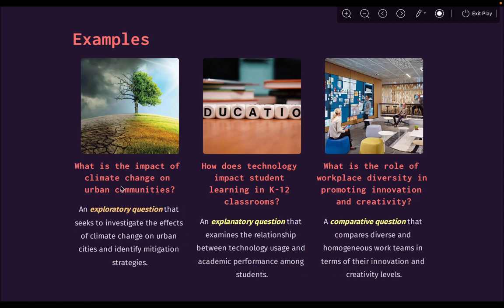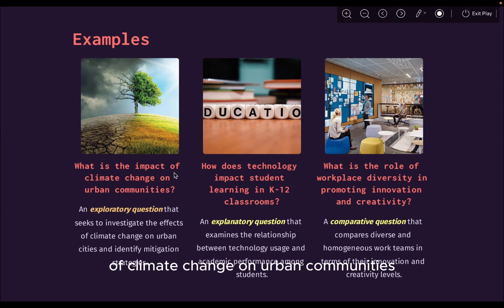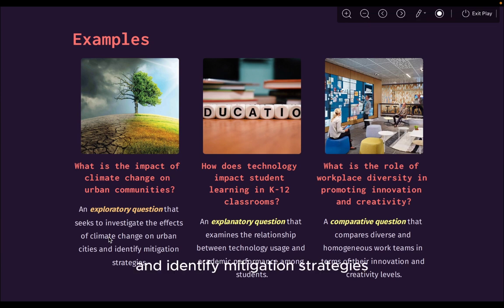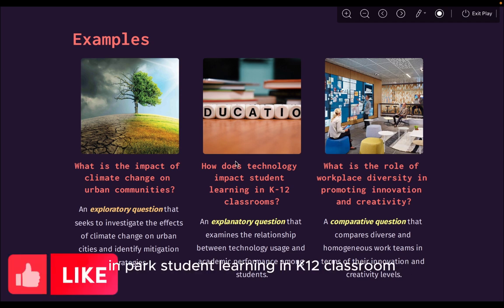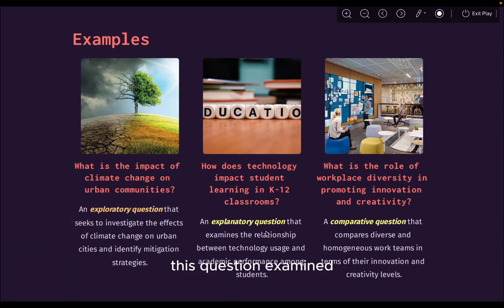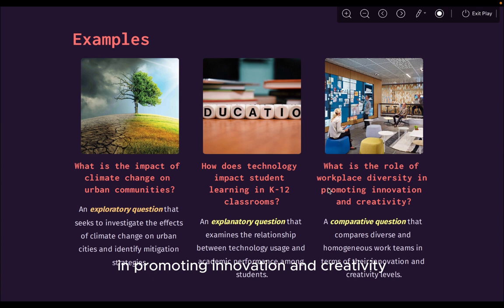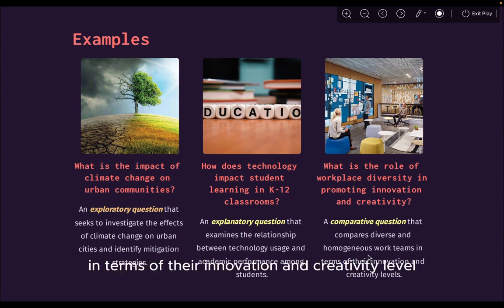Here are some examples of those types of research questions. For exploratory research questions, an example is: what is the impact of climate change on urban communities? This question seeks to investigate the effects of climate change on urban cities and identify mitigation strategies. For explanatory questions, we can ask: how does technology impact student learning in K-12 classrooms? This question examines the relationship between technology use and academic performance among students. For comparative questions, we can have: what is the role of workplace diversity in promoting innovation and creativity? This question compares diverse and homogeneous work teams in terms of their innovation and creativity levels.